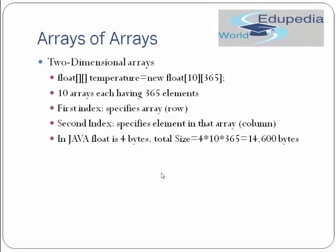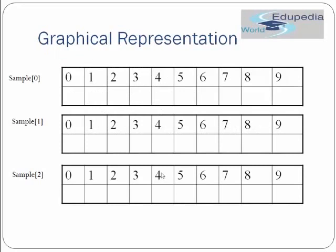Arrays of arrays — two-dimensional arrays. For example: float[][] temperature = new float[10][365]. This creates 10 arrays each with 365 elements; the first index specifies rows (10 rows) and the second specifies columns (365 columns). Since float is 4 bytes in Java, the total size is 4×10×365 = 14,600 bytes allocated to the temperature array.